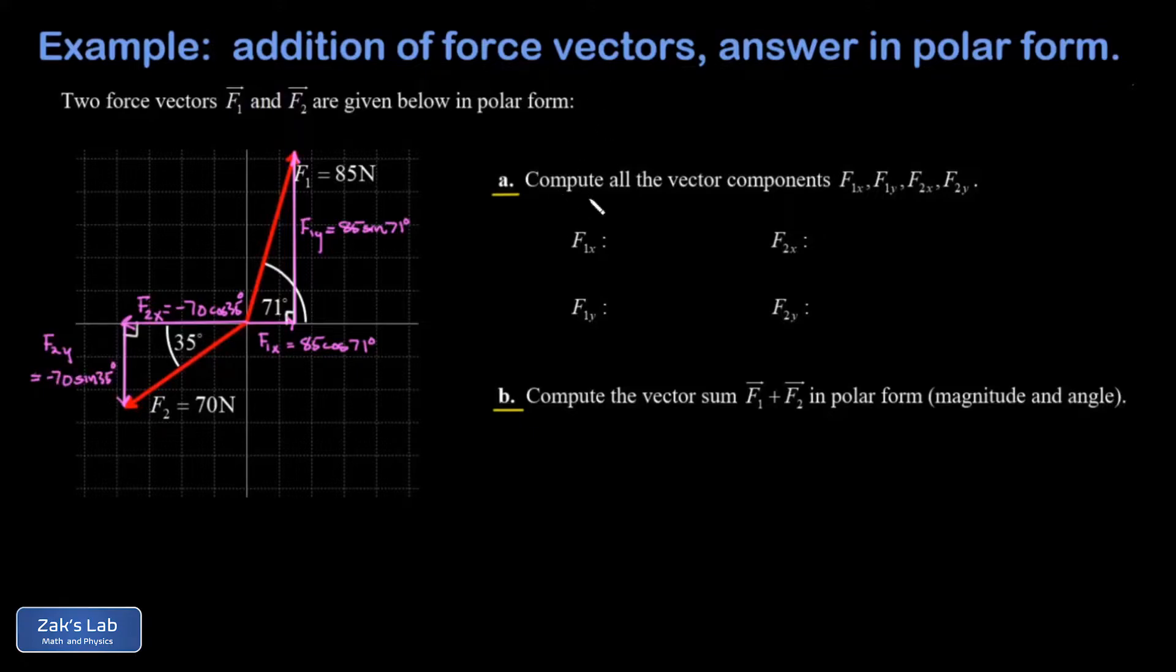So I run the numbers on F1x, that's 85 cosine 71, this gives me 27.7 newtons. F1y, that's 85 sine 71, this gives me 80.4 newtons. F2x, negative 70 cosine 35, this gives me negative 57.3 newtons, again the minus sign indicates this leftward direction. And F2y, that's negative 70 sine 35, that gives me negative 40.2 newtons where the minus sign indicates the downward direction.